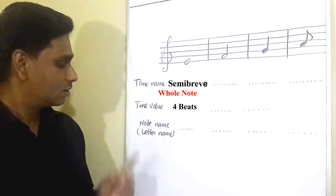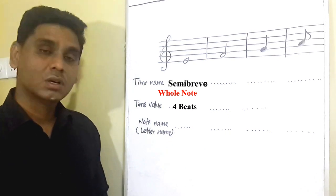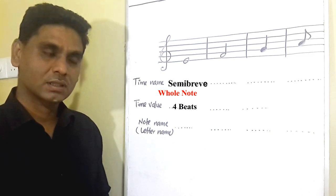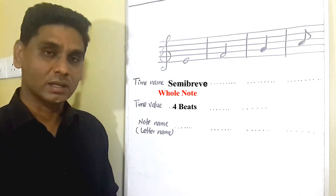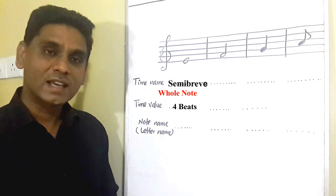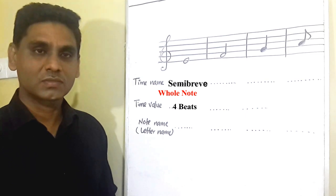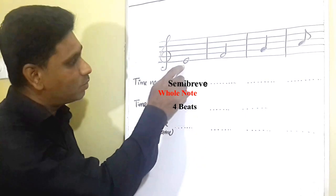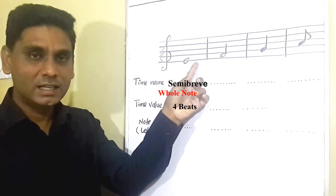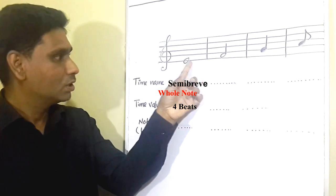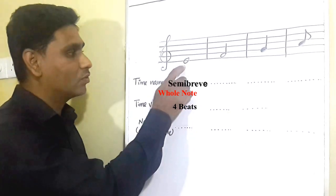I hope you understood about the time value. Now I am going to teach you what is the note name or letter name of a music note. When the music note is in the stave, it gets the note name or letter name. As long as the music note is not in the stave, it doesn't get any note name or letter name. In this case, this semibreve note is already in the first line of the treble stave. The first line is called E. Therefore, this semibreve is E semibreve — the note name of this semibreve is E.